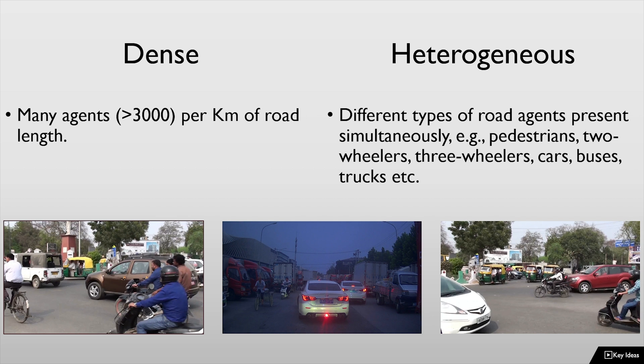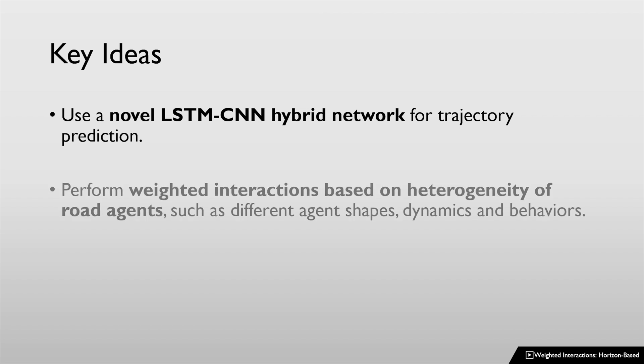We model the heterogeneous interactions between different road agents using a novel LSTM-CNN hybrid network. In particular, we take into account heterogeneous interactions that implicitly account for the varying shapes, dynamics and behaviors of different road agents.